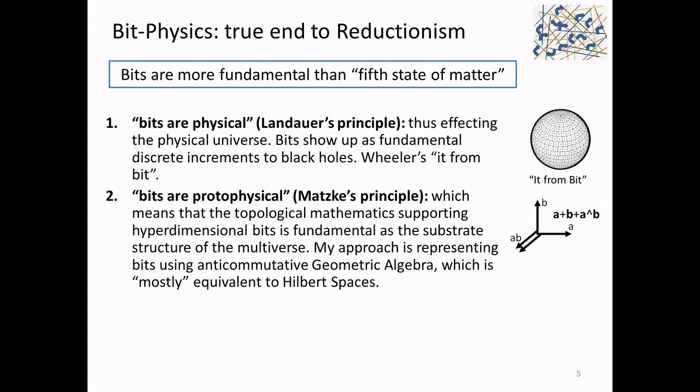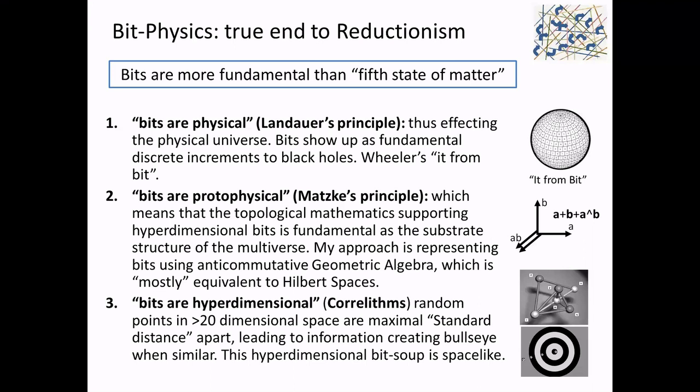This geometric algebra approach is mostly equivalent to Hilbert spaces, with a few exceptions. When you take large sets of bits — more than 20 at a time — you get this odd behavior called choralithms and something called standard distance. It's actually information-generating, like a negative-entropy way of looking at things. Normally random generation is entropy — maximum disorder — but if something is less than random, it's ordered, and that shows up in the information content.